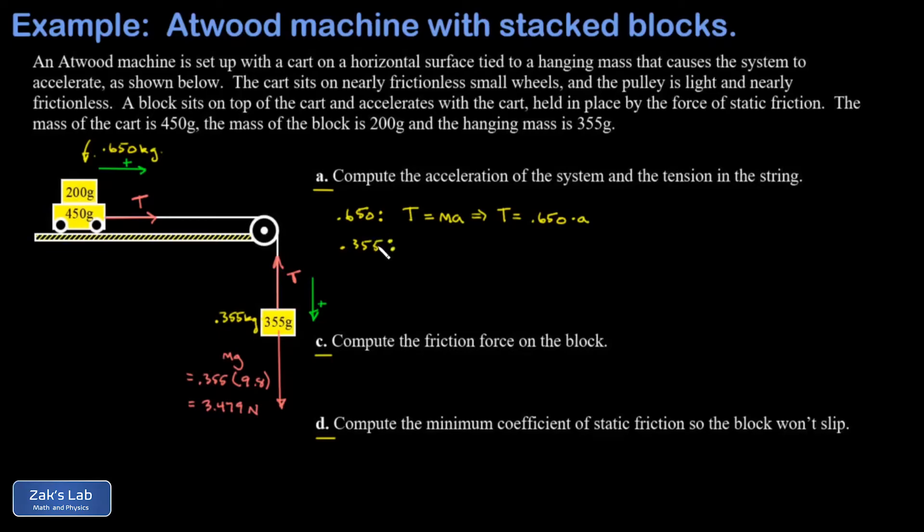Then I look at the hanging mass, 0.355 kilograms, and it has two forces acting on it. And again, downward is going to be the positive direction for the hanging mass because I want the acceleration to come out to be a positive number in both of these equations.